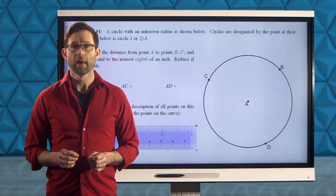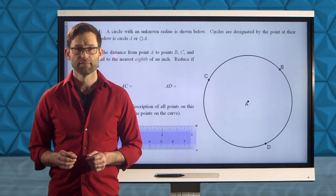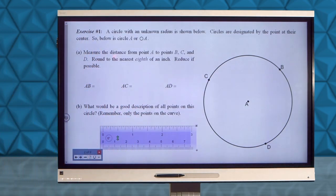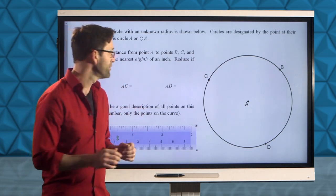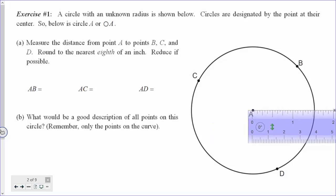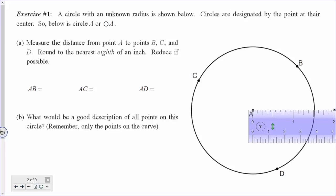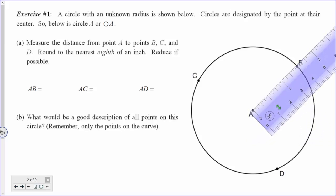Go ahead and measure those three distances and I'll be right back to give you the answers. If we move our ruler up and put our zero point at point A, then rotate our ruler up, what we find is that the length of segment AB is one and a half inches.